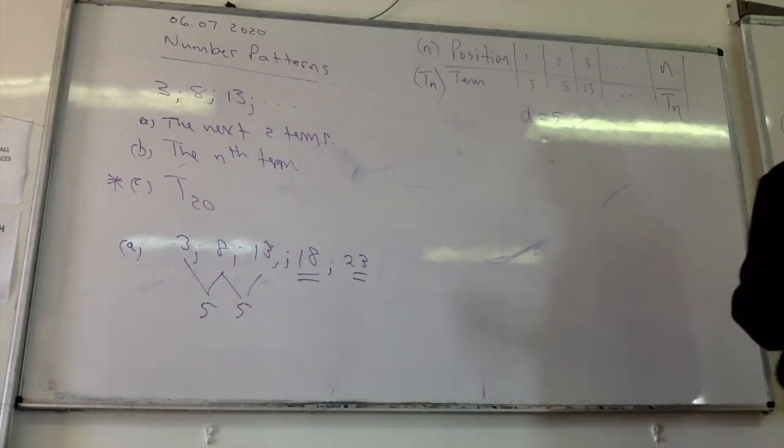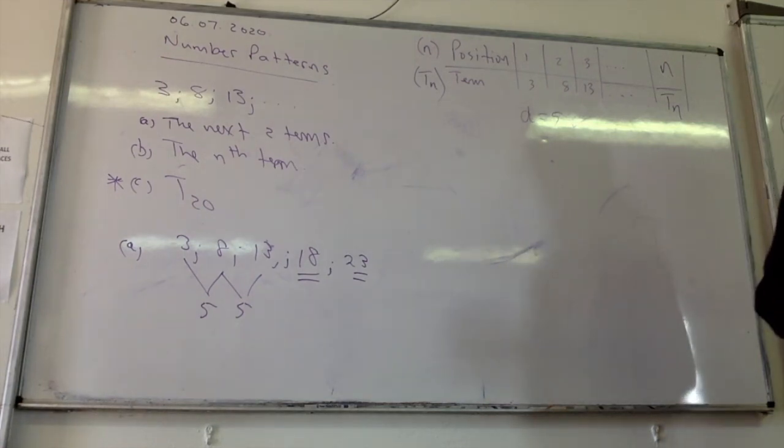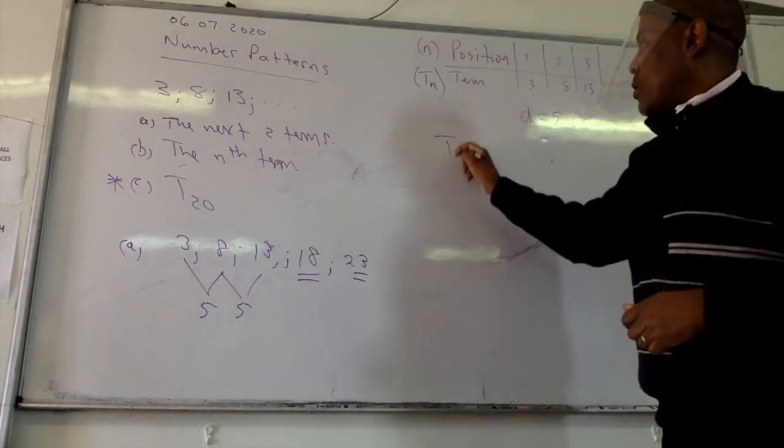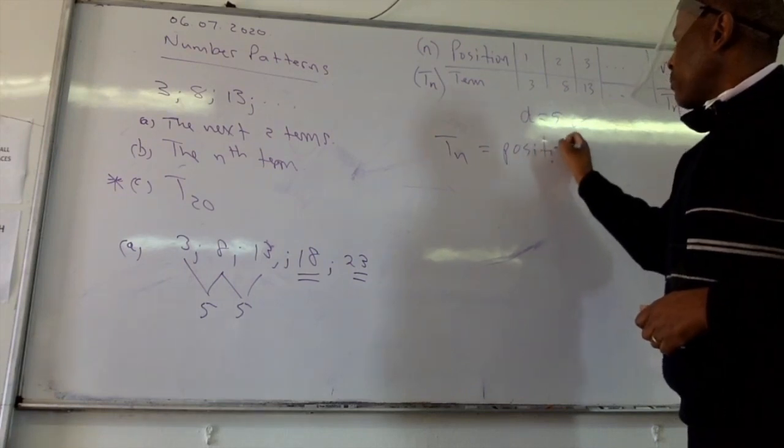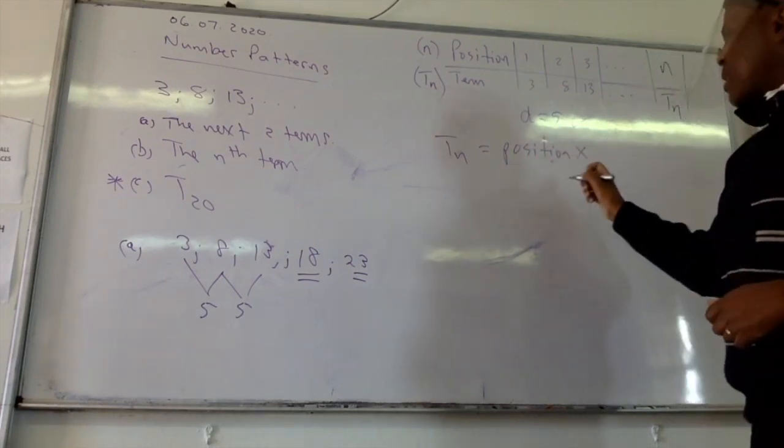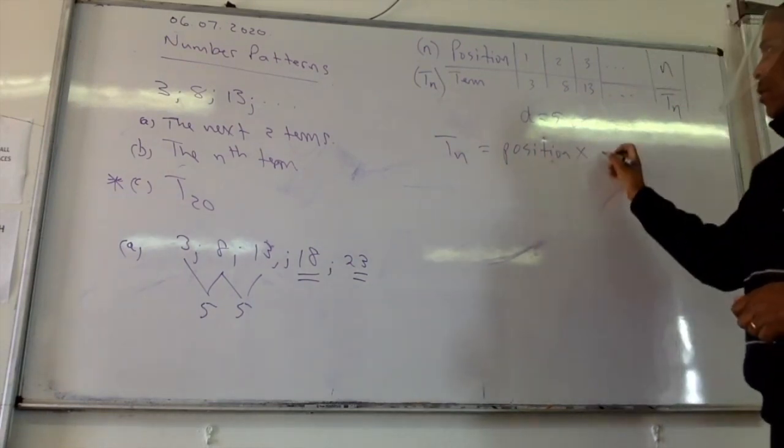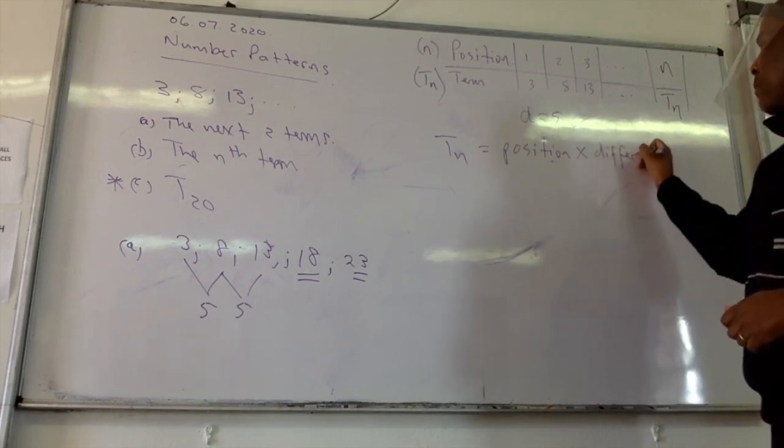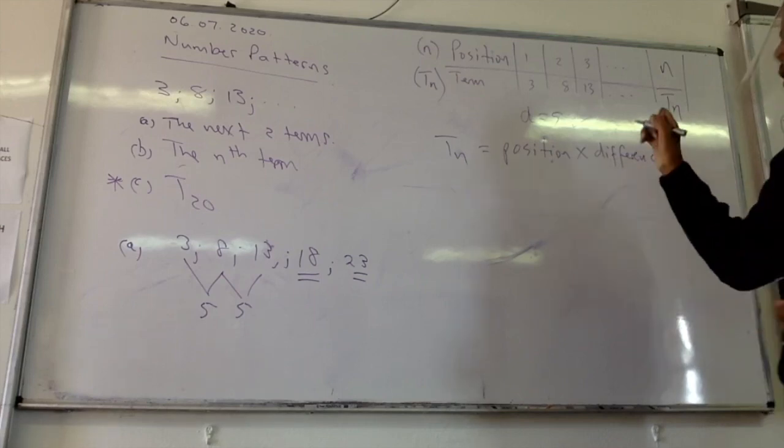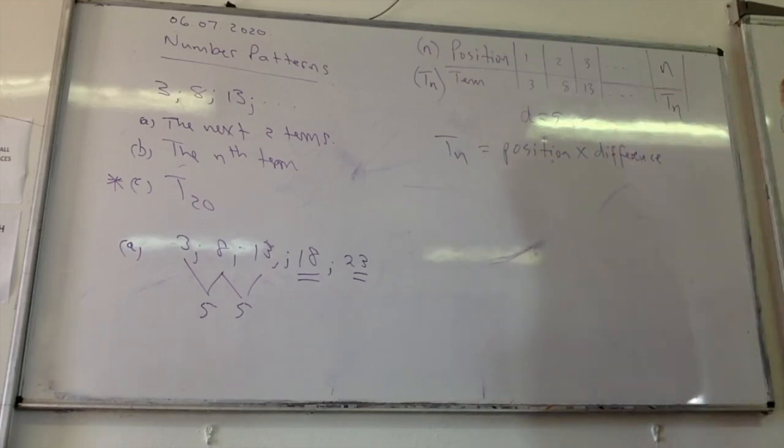So she's saying to get the term, take the position, multiply it by the difference, right? And then, like in this case, if you take the position and you multiply by the difference, start with this one for instance. What is the position here? It's one. And what is the difference? Five.